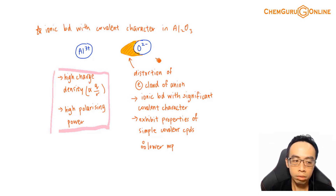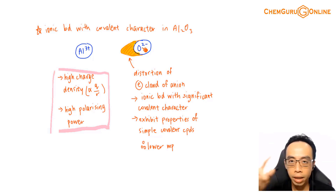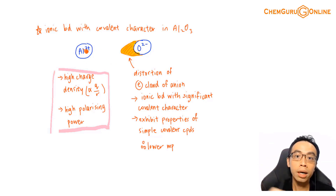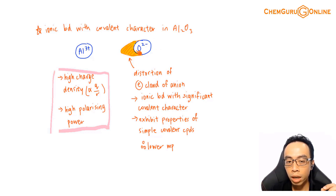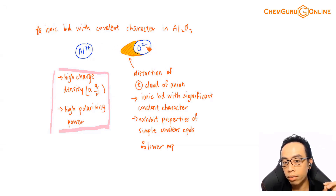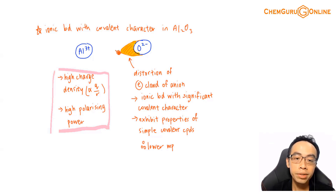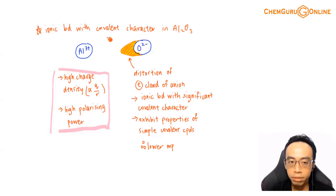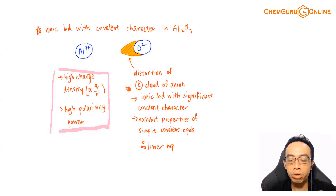Why does this distortion mean there's covalent character? In an ionic compound, each cation is surrounded by anions and vice versa. When Al³⁺ distorts the electron cloud of a specific O²⁻, that distortion is only between this specific Al³⁺ and this O²⁻ — surrounding Al³⁺ ions do not have the same distortion. This means the shaded region is exclusively shared between this specific Al³⁺ and O²⁻, and since it's exclusively shared, the covalent nature and covalent character come in.